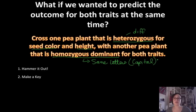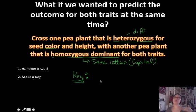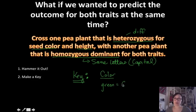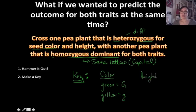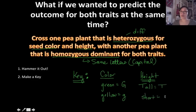The next thing we need to do is make ourselves a key. I'm going to make a key right here, and you can find room on your paper to do the same. I'm dealing with seed color and height. For color: if something is green, it's going to be a capital G; if it's yellow, it's going to be a lowercase g because that's the recessive form. For height: tall pea plants get a capital T, and short pea plants get a lowercase t.